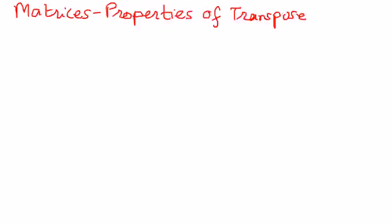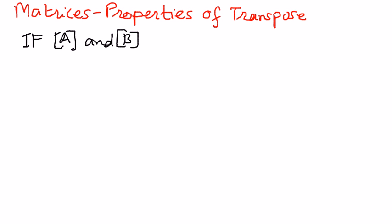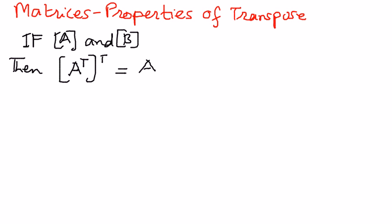Let's look at the first property. If A is a matrix and B is another matrix, then if we take A and transpose it, and then transpose it again, the final matrix is going to be the matrix we started with — the original matrix A.